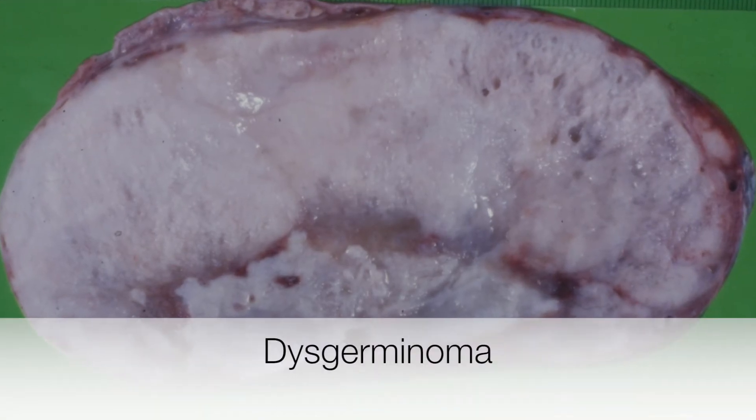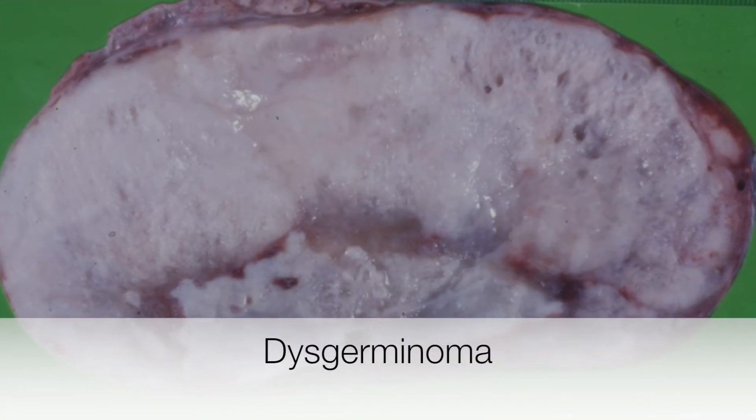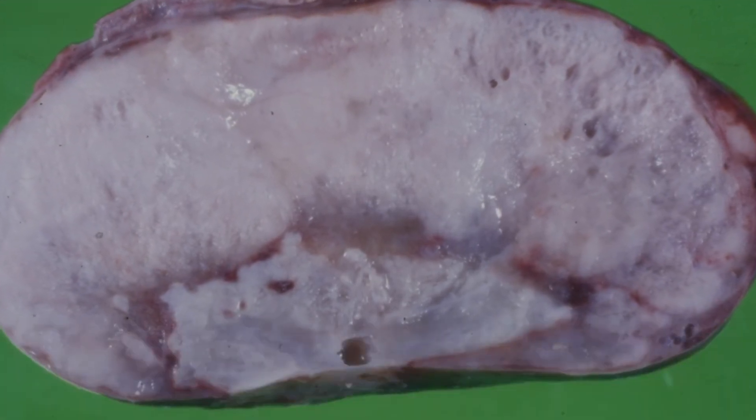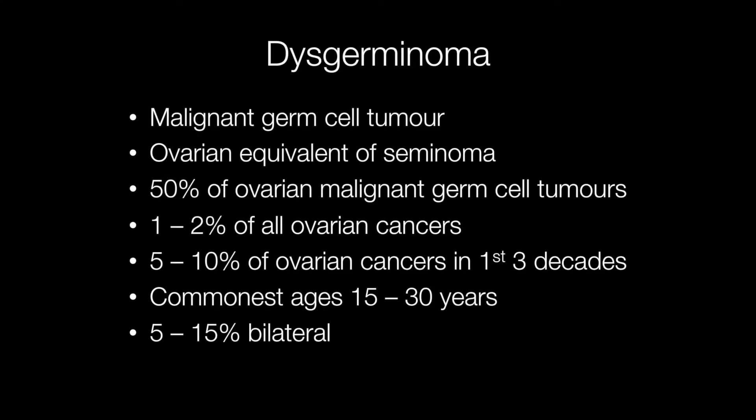This is the gross appearance of a rare malignant ovarian tumour called dysgerminoma. Dysgerminomas are malignant germ cell tumours that arise in the ovary and they are the ovarian equivalent of the classical seminoma that arises in the testis. Dysgerminomas account for approximately 50% of ovarian malignant germ cell tumours and 1-2% of all ovarian cancers.